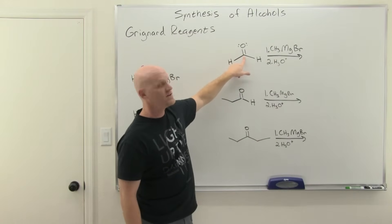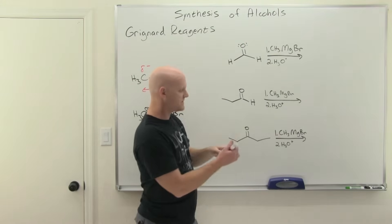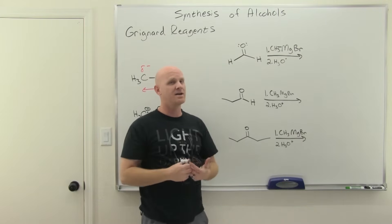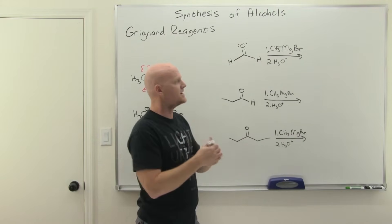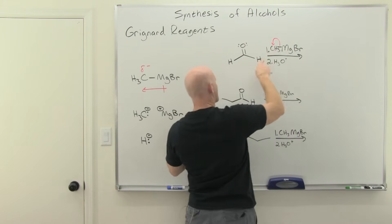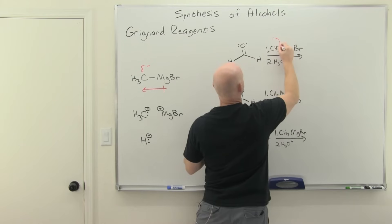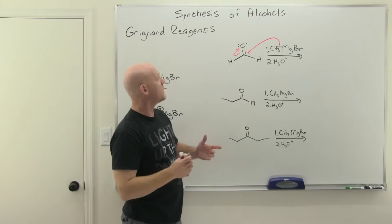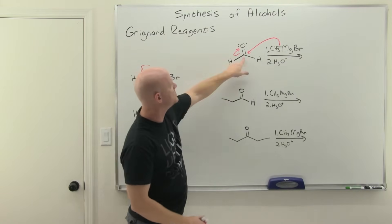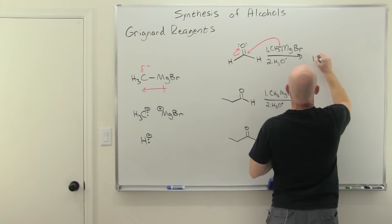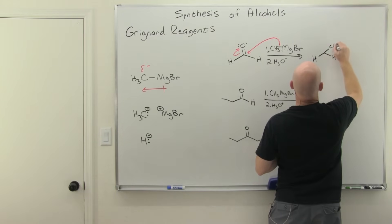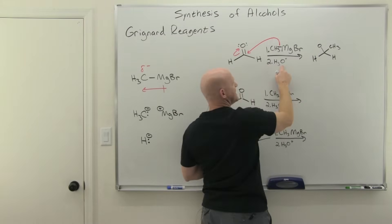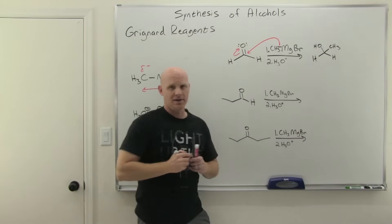The Grignard reagent can be a methyl group, ethyl group, benzene ring — many options for the carbon chain. With methyl magnesium bromide reacting with formaldehyde, the new methyl group attacks the carbonyl carbon. Rather than the carbon breaking off and then attacking, it all happens in concert: the carbon attacks and the pi electrons kick up to the oxygen simultaneously.